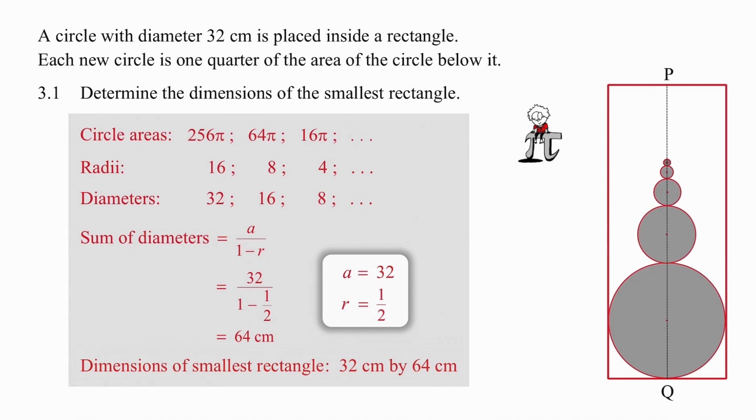So our radii are 16, 8 and 4, which means that our diameters are 32, 16 and 8. There's a definite ratio of a half, which again means we can use the sum to infinity formula because again, a half lies between minus 1 and 1. The first diameter is 32 and using the sum to infinity formula, substituting in 32 and the ratio of a half, the maximum length of that rectangle is going to be 64 centimeters. So the dimensions are the width and the length 32 centimeters by 64 centimeters.